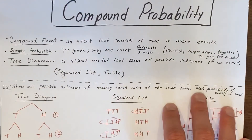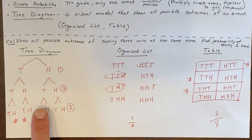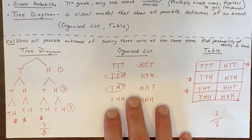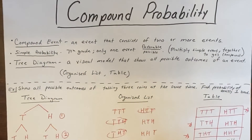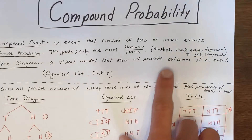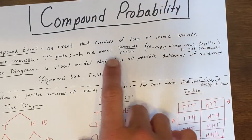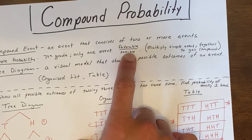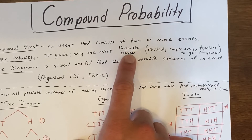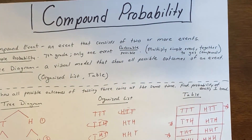For compound probability, remember there are three ways to organize your information: tree diagram, organized list, and table. When you don't need to organize information separately, just take your simple probabilities — favorable outcomes over possible outcomes — and multiply them all together to get your compound probability.